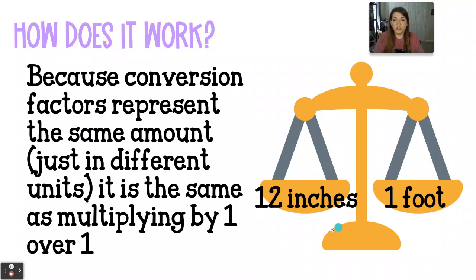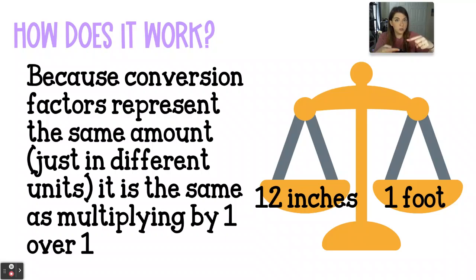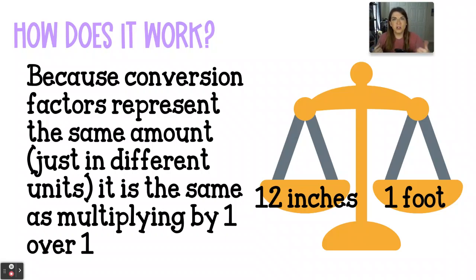Like right here, we have 12 inches and one foot — those are equivalent values; they represent the same distance. So if we multiply the top and the bottom of an equation by two values that are equivalent to each other, thinking like a math-brained person, this is exactly the same thing as multiplying by one over one, or two over two, or 500 over 500. Because they're equivalent values, we're allowed to do it, and it doesn't actually change anything except for the unit, which is what we're going for.